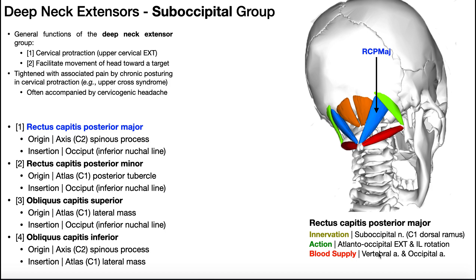The action of rectus capitis posterior major is to produce atlanto-occipital extension — a small amount, since the vast majority of overall extension comes from muscles like the upper traps. The atlanto-axial joint between C1 and C2 really just allows rotation, so extension mainly occurs at the atlanto-occipital joint. Notice this muscle can also give a little bit of ipsilateral rotation, which occurs mainly at the atlanto-axial joint. Blood supply is via the vertebral artery and the occipital artery.